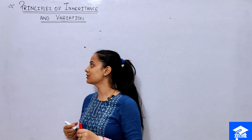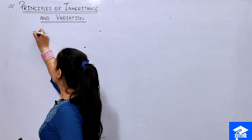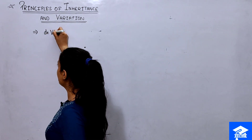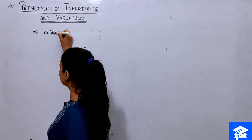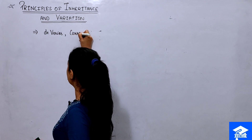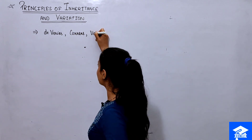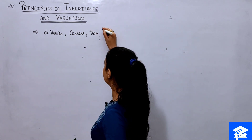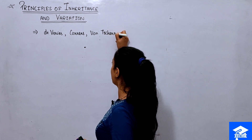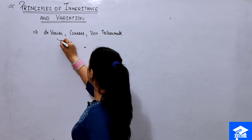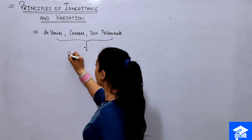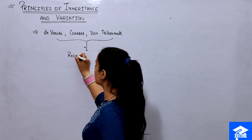Let's talk about the researchers who recognized Mendel's work. Hugo de Vries, Correns, and Von Tschermak — these three researchers worked individually and ultimately each recognized Mendel's work.